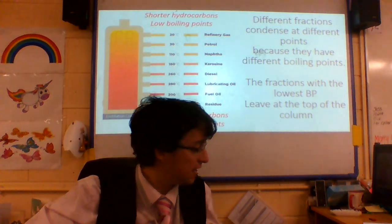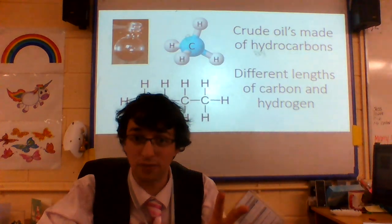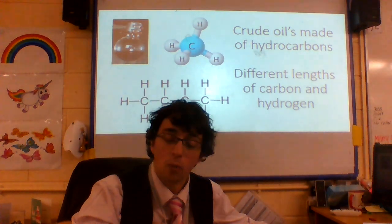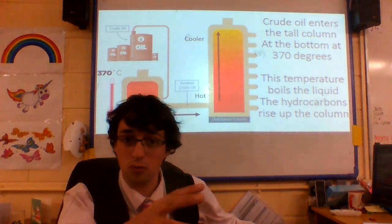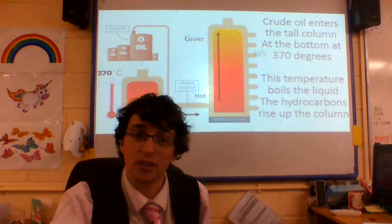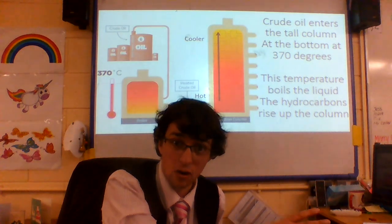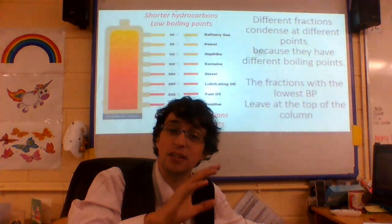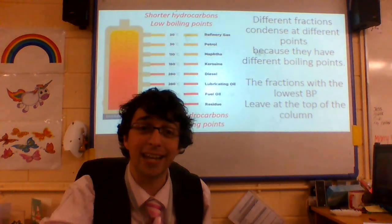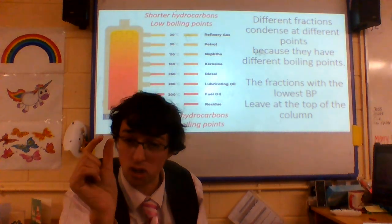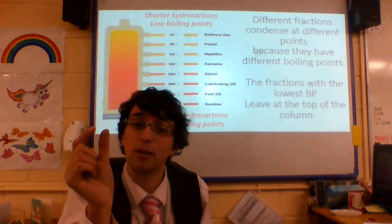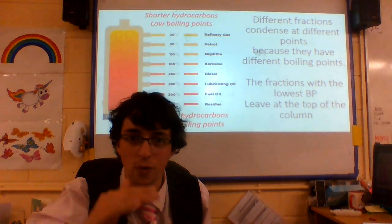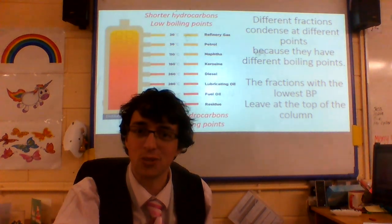So crude oil is simply made of hydrocarbons — a mixture of different lengths of them — and a hydrocarbon is simply made of carbon and hydrogen. When we talk about fractional distillation, we add the crude oil at that high temperature of 370 degrees. It boils the liquid, except for the residue that runs straight off at the bottom. The hydrocarbons rise up the column and we get different fractions depending on their boiling points. The shorter the hydrocarbon chain, the lower the boiling point, so it travels to the very top of the column.